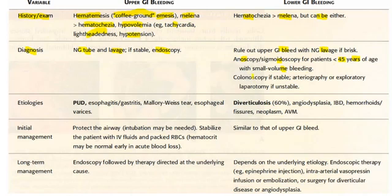Colonoscopy if the patient is stable. Arteriography or exploratory laparotomy if the patient is unstable. To summarize: for lower GI bleed, do colonoscopy if stable; for upper GI bleed, do endoscopy if stable.